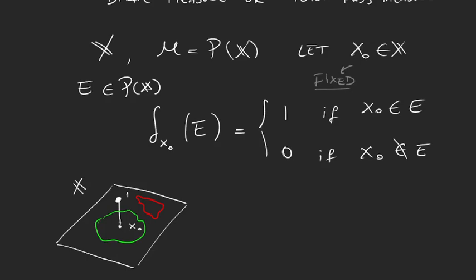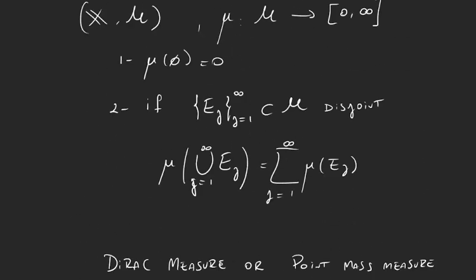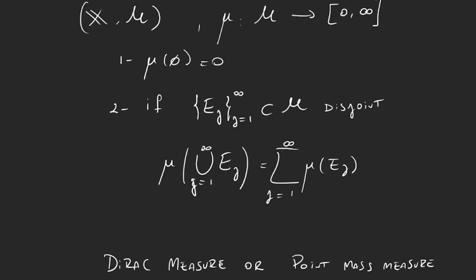So this is the measure or this is the function we've defined. Now we have to prove that it actually is a measure. We have to prove that it satisfies these two properties I mentioned. Delta of the empty set is 0 and delta of the countable union of disjoint sets is the sum of the measures of each set.